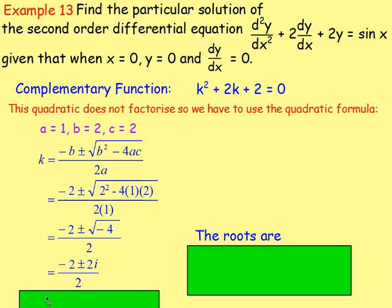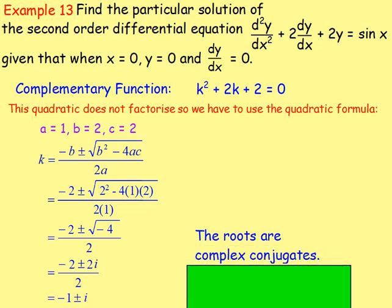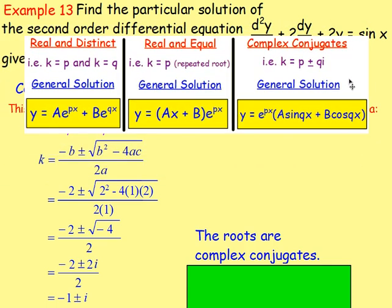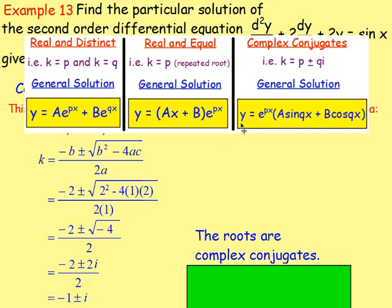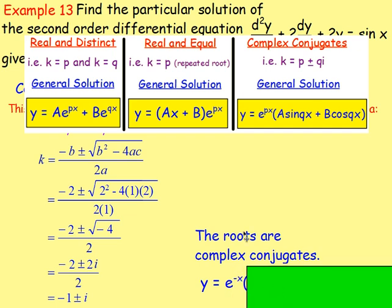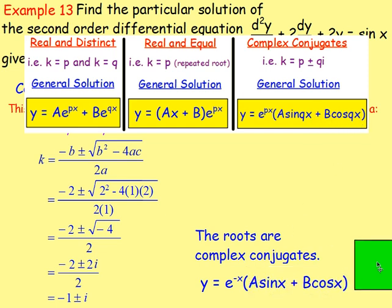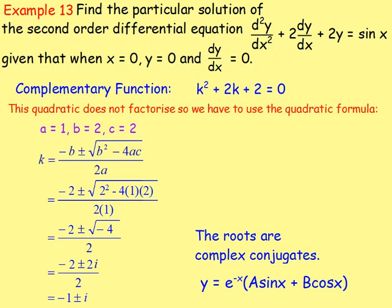Dividing: −2/2 = −1, and 2i/2 = i, so the roots are −1 ± i — complex conjugates. When the roots are complex conjugates, the complementary function is y = e^(−x)(a sin x + b cos x). That there is the complementary function. Now we need the particular integral because the equation does not equal zero.